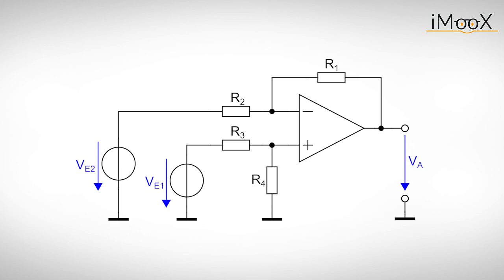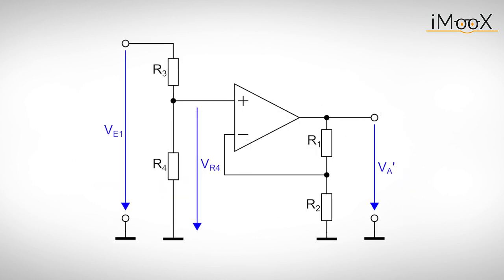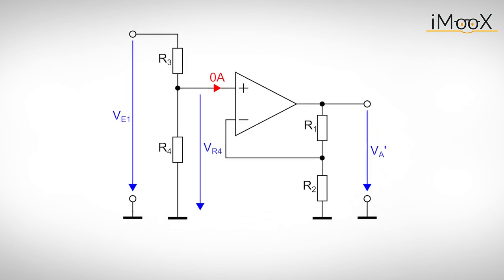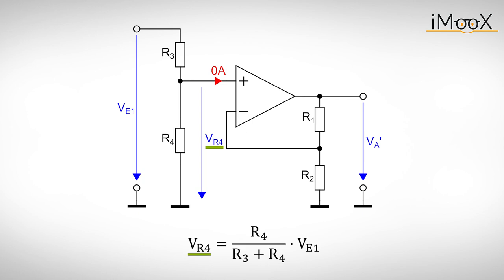We again use the superpositioning principle and investigate Ve1 first. We redraw the circuit and see that we now have a voltage divider followed by a subsequent non-inverting amplifier. According to our rules the non-inverting amplifier does not put any load on the voltage divider. Hence the output voltage of the voltage divider Vr4 is given by R4 divided by R3 plus R4 times Ve1. Multiplying this voltage by the gain of the non-inverting amplifier gives the first output voltage Va'.